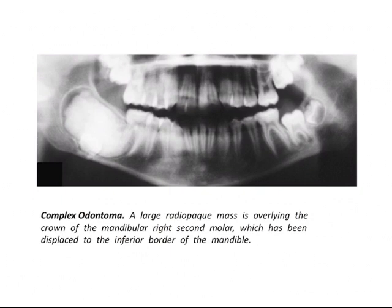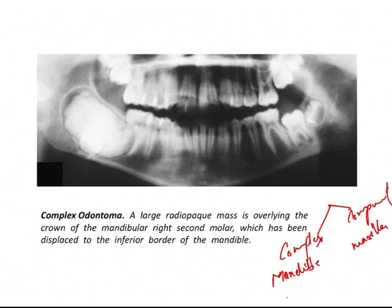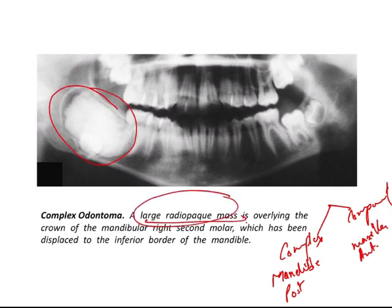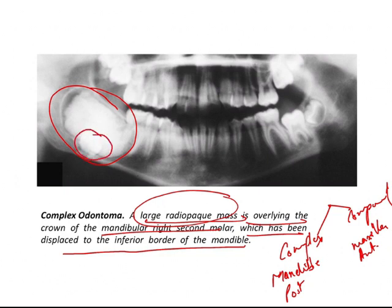Now you should know what a complex odontoma looks like. To summarize: compound occurs in the maxilla and anterior region, while complex occurs in the posterior mandibular region. Complex odontomas are large radiopaque masses. This example shows a complex odontoma overlying the crown of the mandibular right second molar, which has been displaced to the inferior border of the mandible, covering it completely.